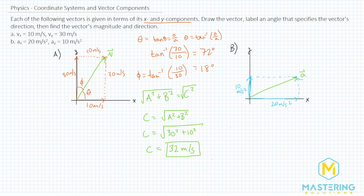One important component with the angles is that we have to specify the direction. Theta is 72 degrees above the positive x-axis, and phi is 18 degrees to the right of the positive y-axis. This matters because if 72 degrees were labeled as phi it would be wrong, and if 18 degrees were labeled as theta it would be wrong. We need both the degrees and the direction.